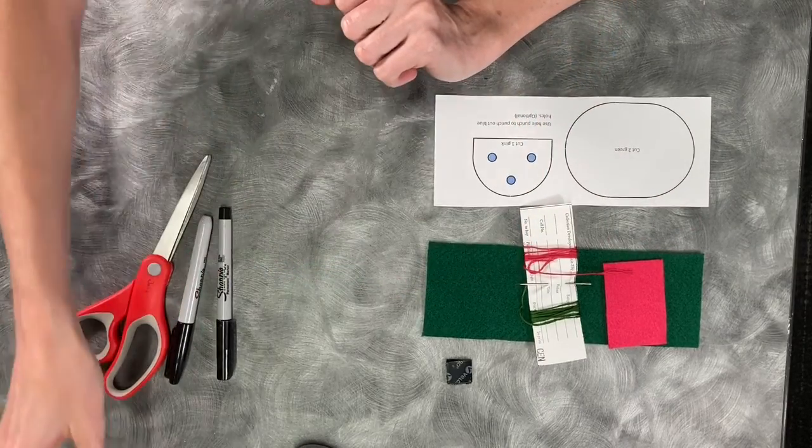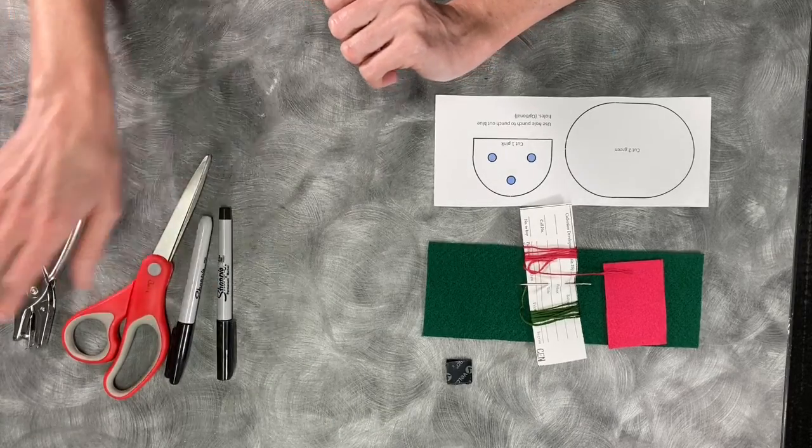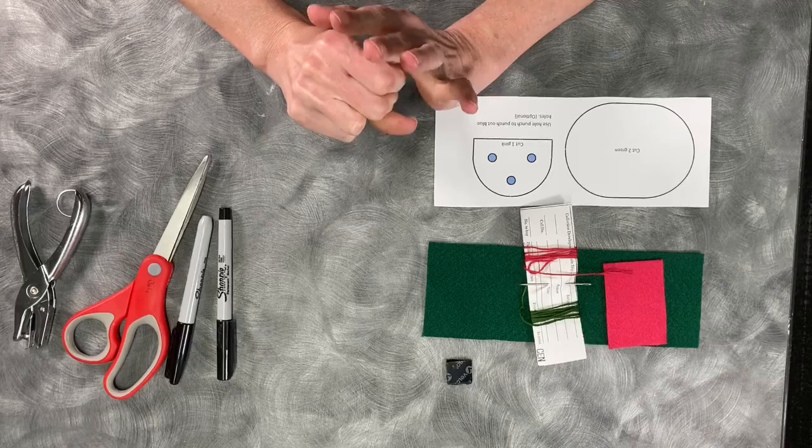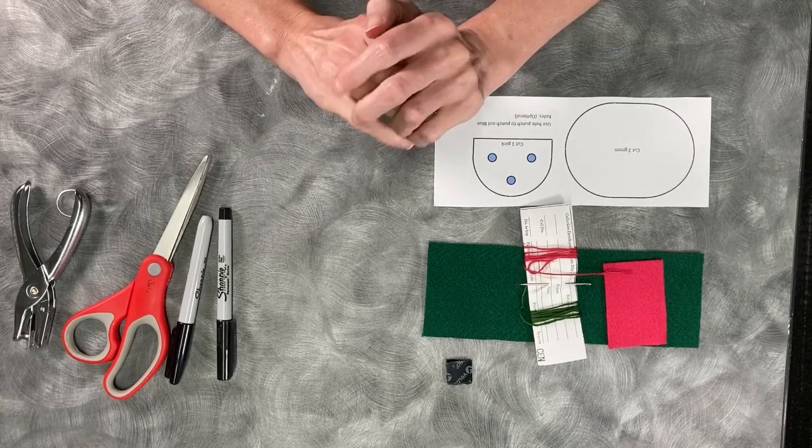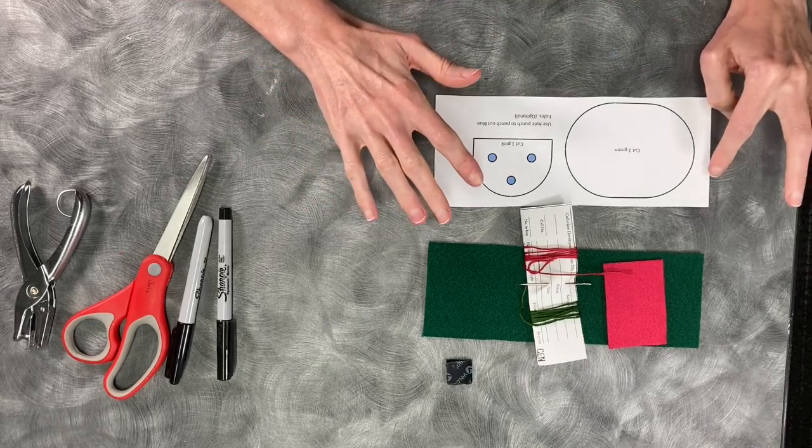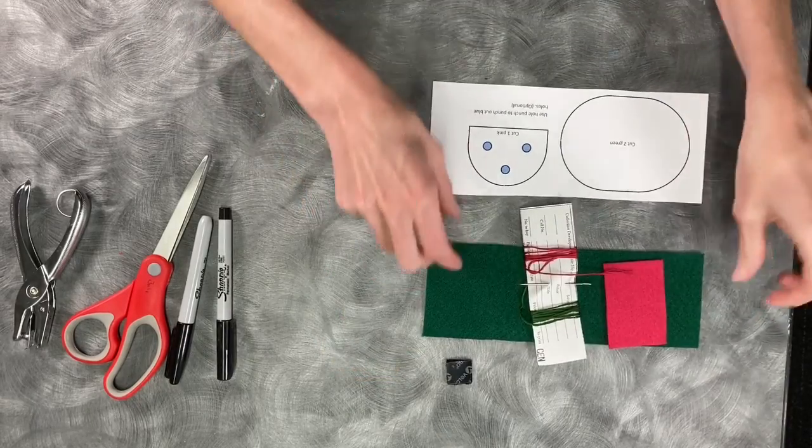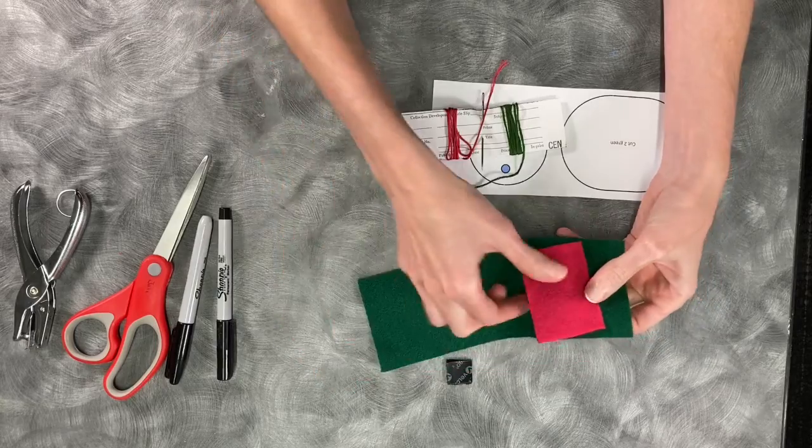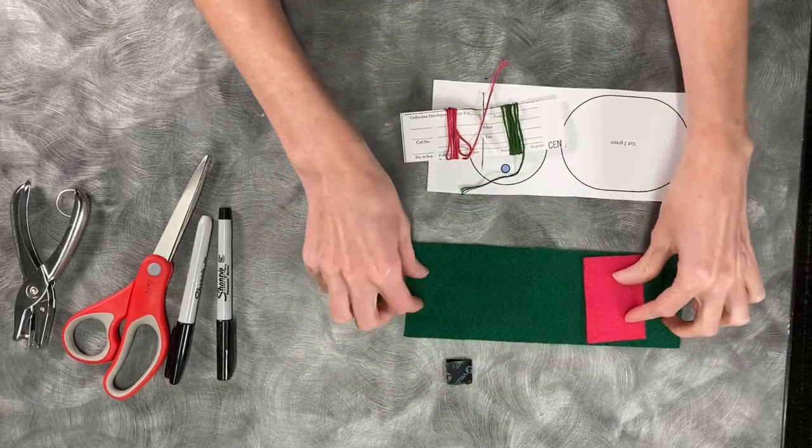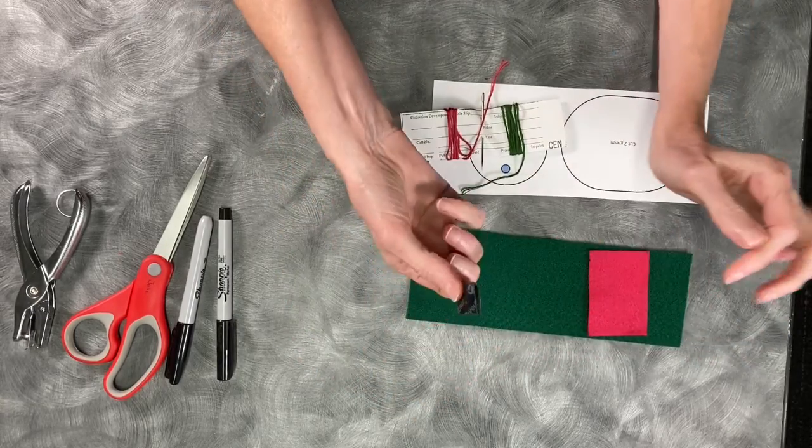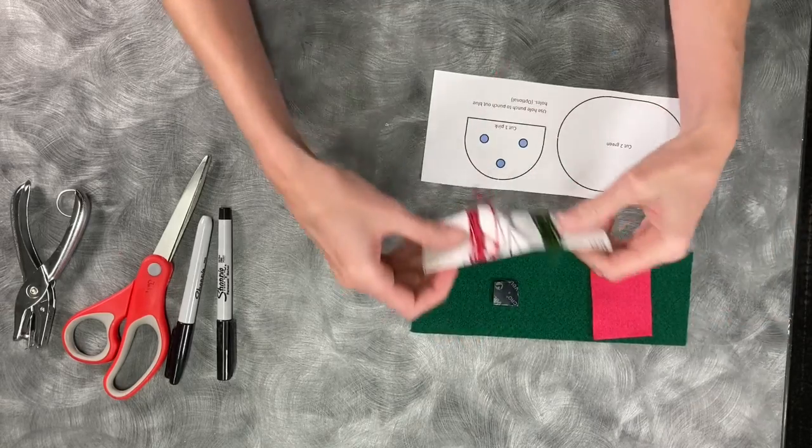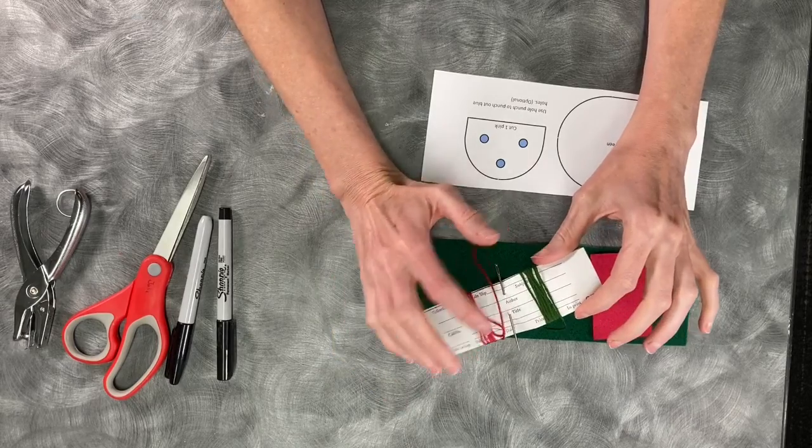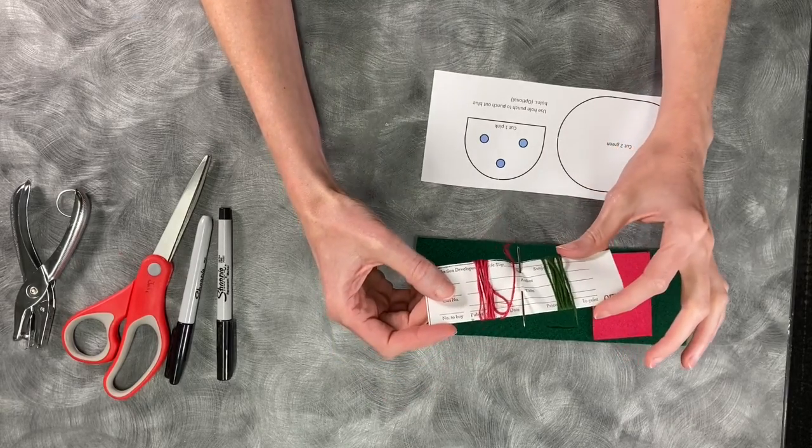First I'm going to show you the supplies that you will need. In your kit when you pick them up at the Central Branch Library, remember supplies are limited so come pick them up. You will have a template like this, a piece of green felt, a piece of pink felt, a small piece of stick-on velcro, and coordinating thread in both green and pink and a needle. Your needle should be stuck right along there with the thread.